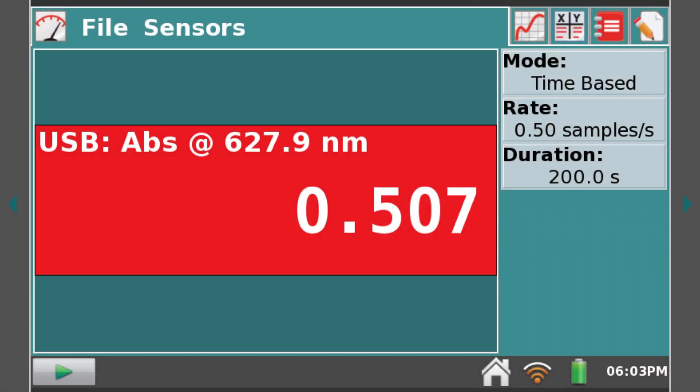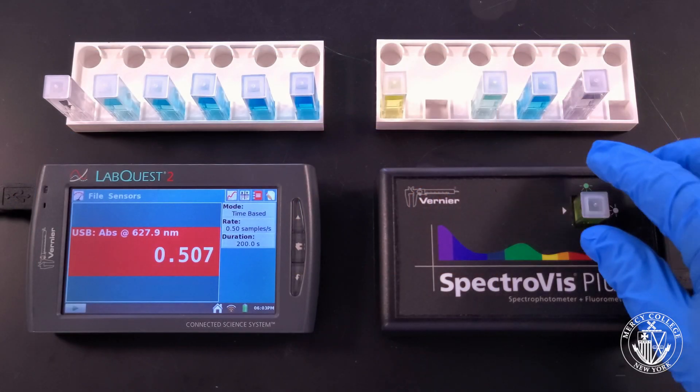Our second sample of fierce green apple appears to have an absorbance of 0.507.